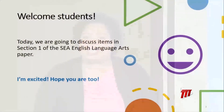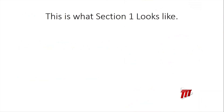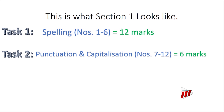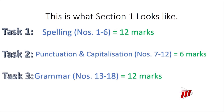Today we're going to be exploring Section 1 of the English Language Arts SEA exam. Just to remind you what this section looks like: you have three tasks. Task 1 has spelling, six items, for 12 marks — one mark for identifying the error, and one mark for actually writing the correction. Task 2 is punctuation and capitalization, six marks. And finally, Task 3, which is your grammar task, items 13 to 18, for 12 marks — one mark for identifying the error, and another mark for writing the correct answer.